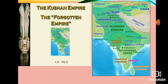The Kushanas had two capitals: one at Purushapura near modern Peshawar, and the second at Mathura. The Kushanas encouraged India's trade with Central Asia and gained control over the Silk Route, which was the most important trade route.